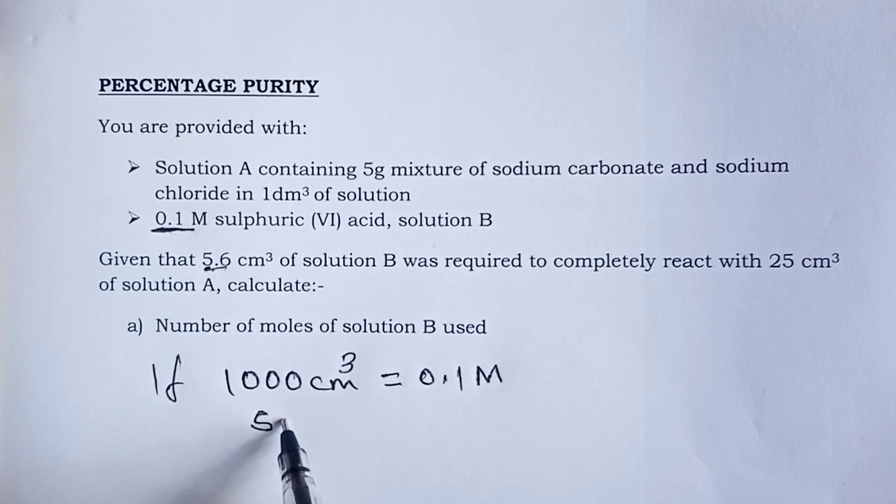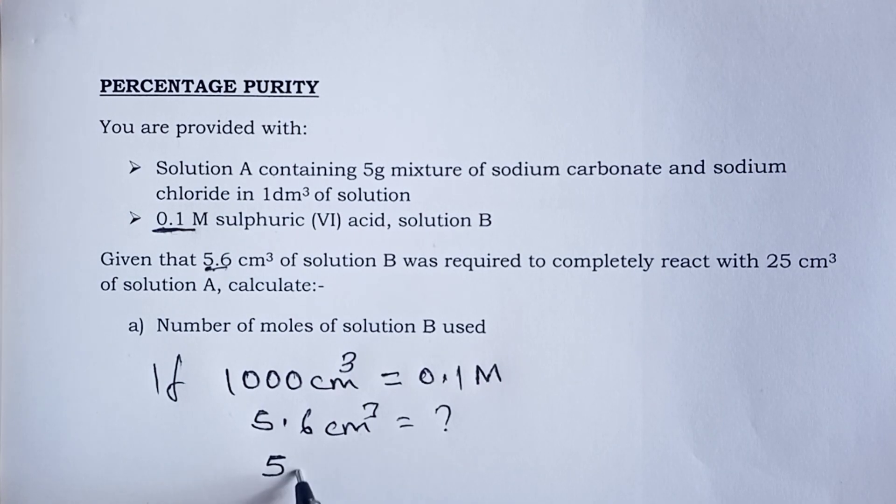we only used 5.6 cubic centimeter. So 5.6 cubic centimeter would end up containing how many moles? Simple cross multiplication gives 5.6 times 0.1 divided by 1,000. And our answer becomes 0.00056 moles for part A.